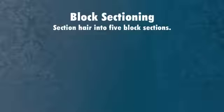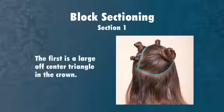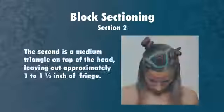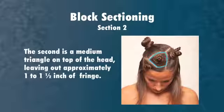Block sectioning. Section hair into five block sections. The first is a large off-center triangle on the crown. The second is a medium triangle on the top of the head, leaving out approximately one to one and a half inches of fringe.